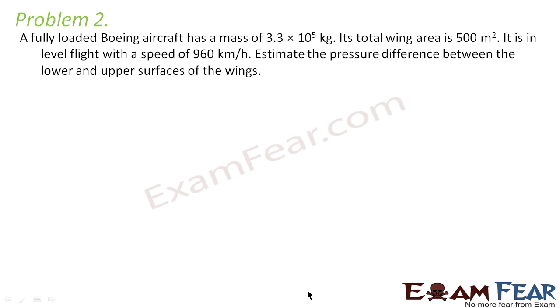It states a fully loaded Boeing aircraft has a mass of 3.3 into 10 to the power 5 kg. Its total wing area is 500 meter square. It is in level flight with a speed of 960 kilometers per hour. Estimate the pressure difference between the lower and the upper surfaces of the wings.